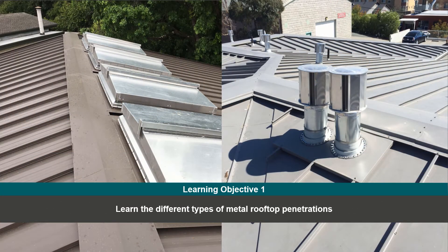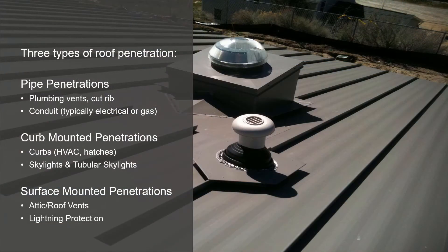Proper installation of roof penetrations and curbs for metal rooftop equipment is a critical component in a properly functioning roof system. In the first learning objective we are going to explore some of the different types of metal rooftop penetrations. There are three different types of metal roof penetrations, so let's go through each of them.